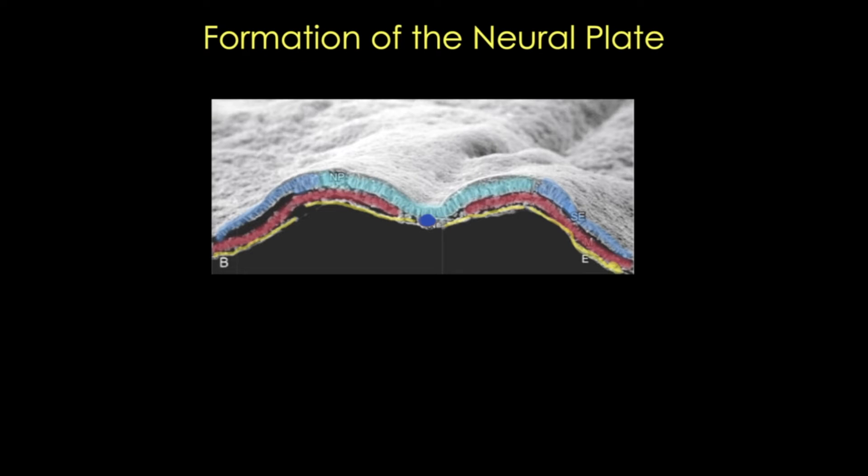Neurulation, which is formation of the neural plate and then the neural tube, actually begins during the fourth week, around day 22 or 23, in the region of the fourth to sixth pair of somites.